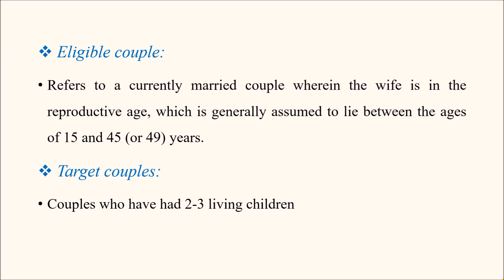Next is 'target couples.' Target couples are couples who have two to three living children in their family. The word 'target' means that if a couple already has two to three living children, they are the target for different family planning practices — they should adopt family planning methods so that there is no further pregnancy, since we are promoting the small family norm.